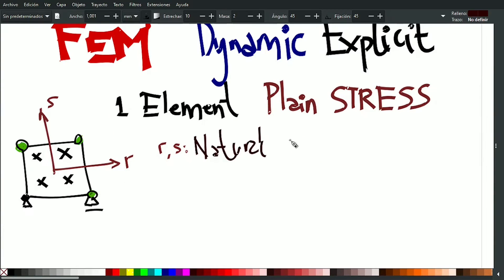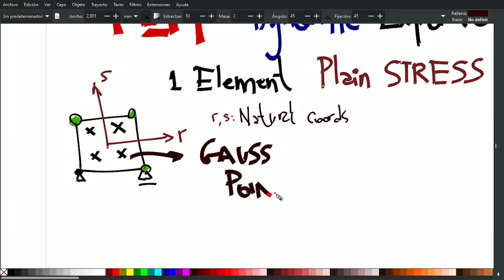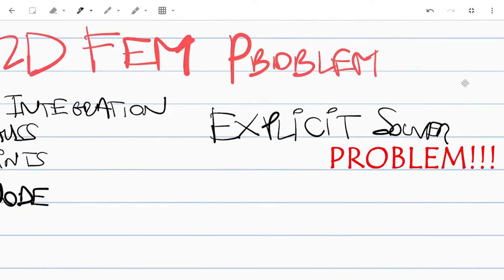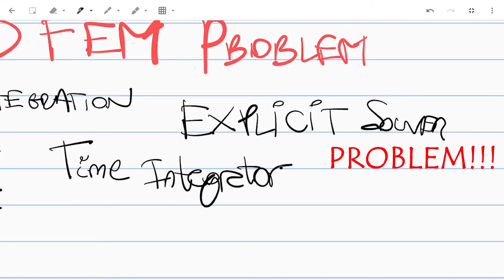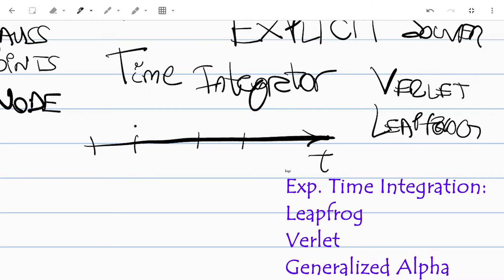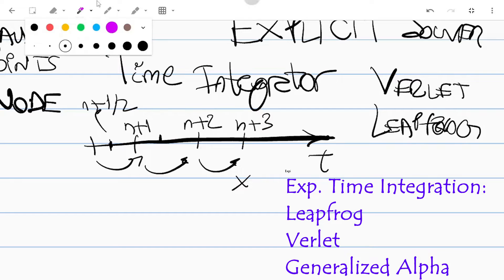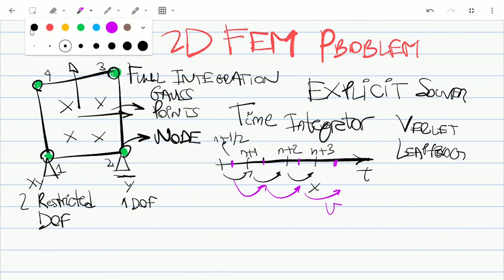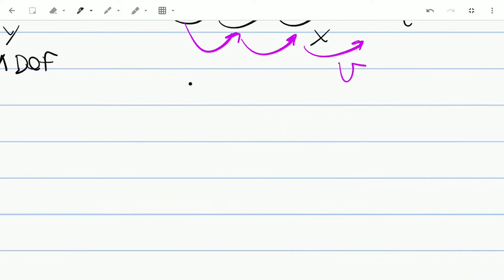We will see later in following videos that integration used to be reduced in 2 dimensions to only one integration point with some hourglass corrections. In a transient explicit solver which is conditionally stable regarding time step size, positions and velocities are obtained from the previous values. There are different explicit integration methods, but the common base is that velocity and position are calculated at different times.